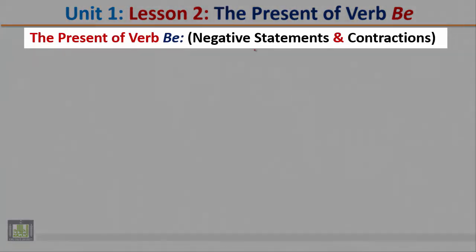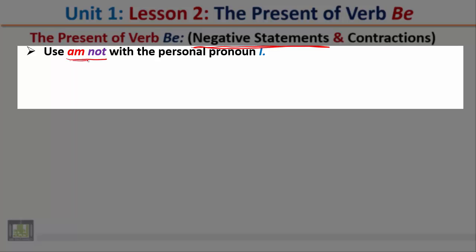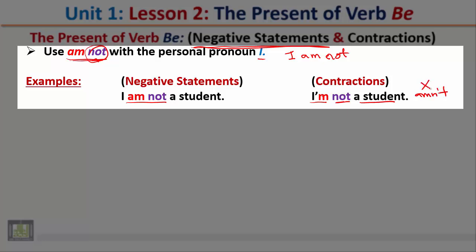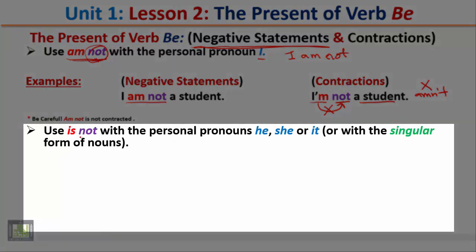The Present of Verb Be: negative statements and contractions. Now we move to the negative form. Use 'am not' with the personal pronoun I. To make the negative form, we say 'I am not.' For example: 'I am not a student.' The affirmative form is 'I am a student,' but the negative form is 'I am not a student.' Notice that am and not cannot be contracted — we cannot say 'I'm not a student' as a contracted am-not form.